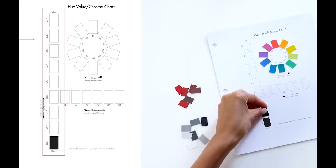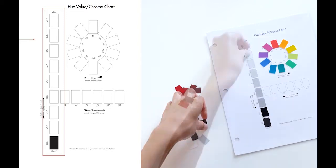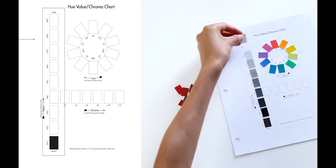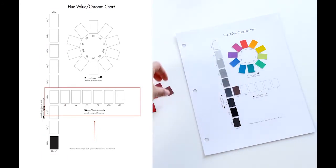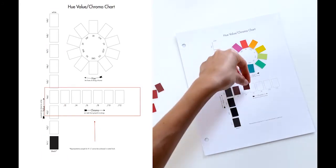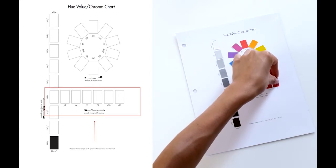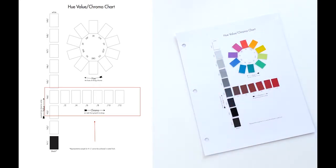Arrange the eight neutral grey chips in the vertical value sequence column, and then arrange the six red chips from low chroma to high chroma on the horizontal row at the four slash value level.